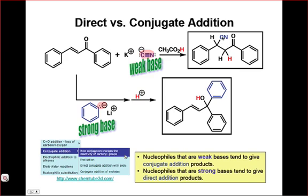In the conjugate addition product, CN and H have added across the carbon-carbon double bond of the alpha-beta unsaturated ketone, whereas in the direct addition product, the nucleophile, phenyl anion, and hydrogen have added across the carbon-oxygen double bond of the product.